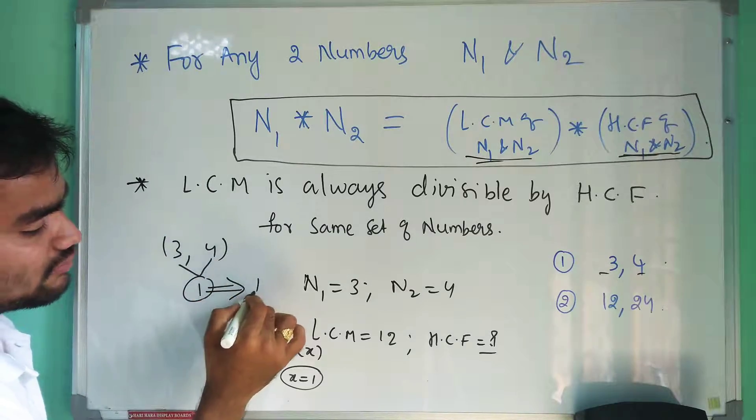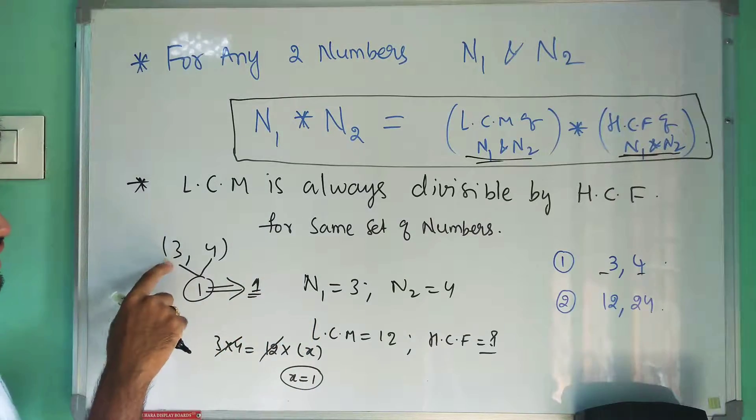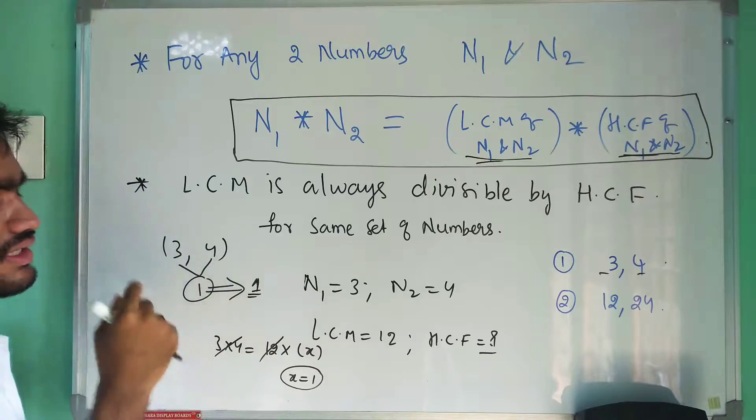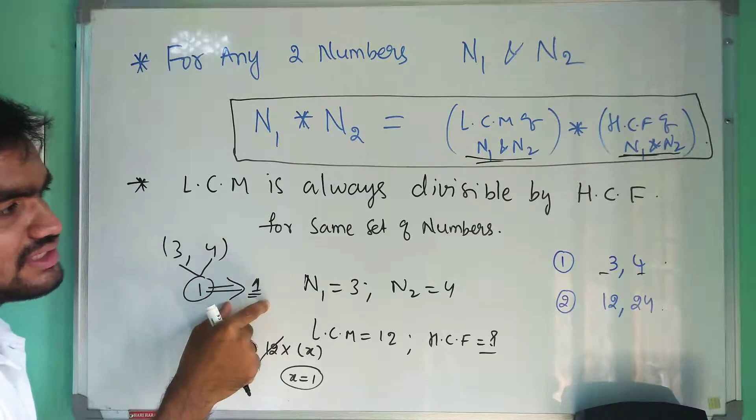So you can say that 1 is the HCF of 3 and 4, or simply you can say that these two are co-prime numbers. So the HCF of co-prime numbers is always equal to 1.